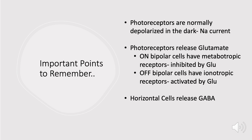The next thing is that photoreceptors release glutamate. Depending on whether we're dealing with on or off bipolar cells, we're going to see different responses to this glutamate. On bipolar cells have metabotropic receptors — think GPCR — and glutamate has a negative, inhibitory action on these receptors. Off bipolar cells have ionotropic receptors — think sodium channels — and in this case glutamate promotes the influx of sodium, so it works positively on these receptors.